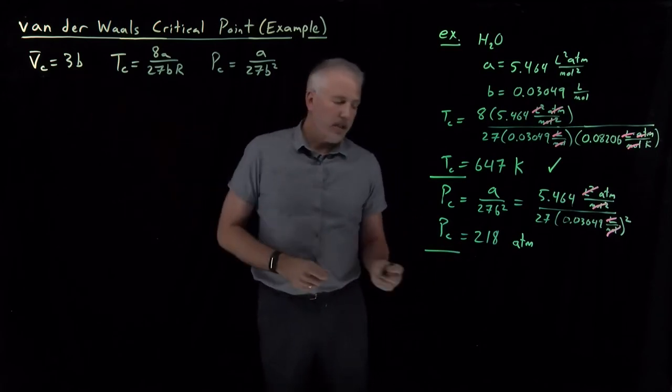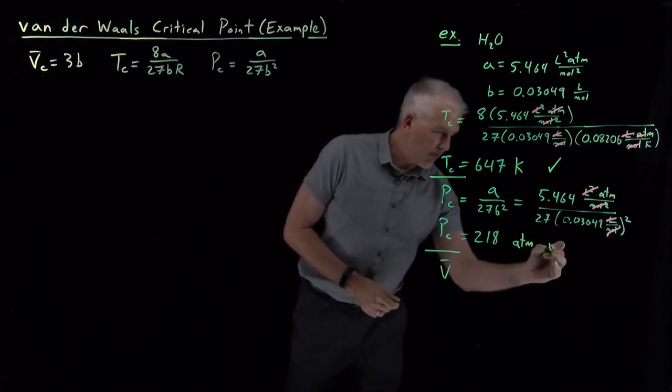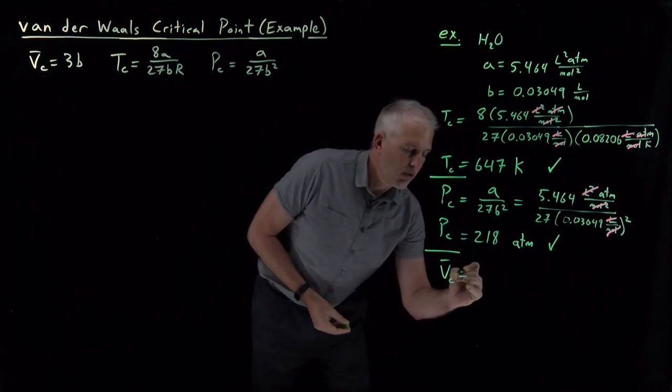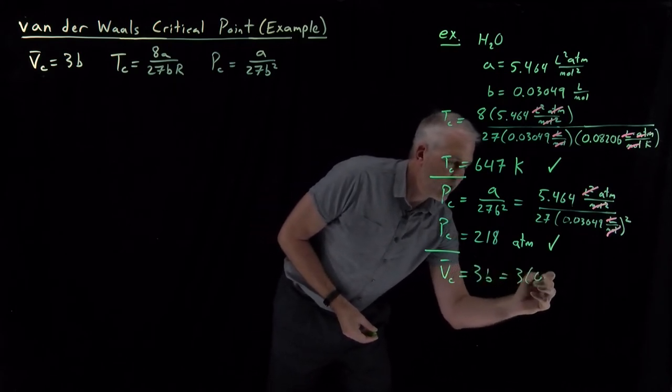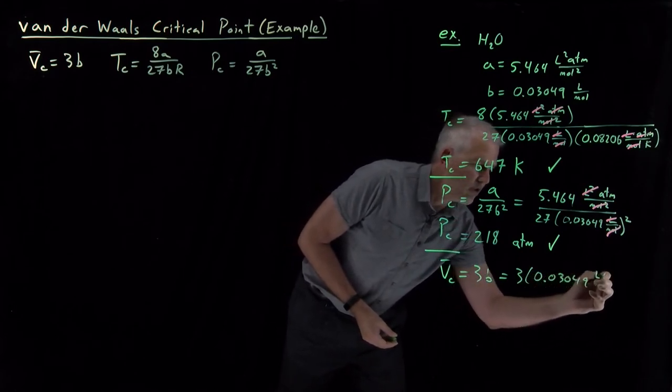The last one is the one with the easiest arithmetic, the molar volume. And I should say that's also, again, very close to the actual critical pressure. The molar volume at the critical point, 3 times B, 3 times that 0.03049 in liters per mole.